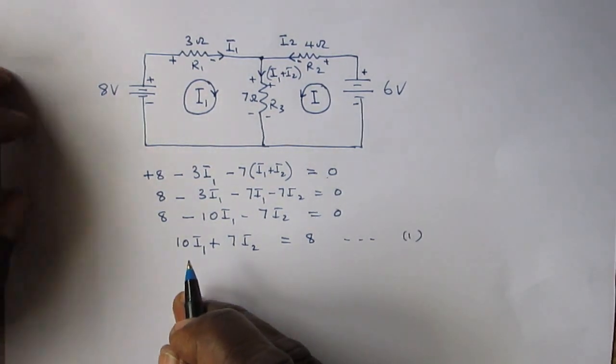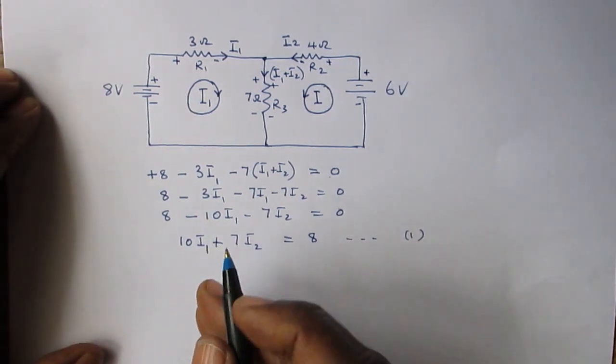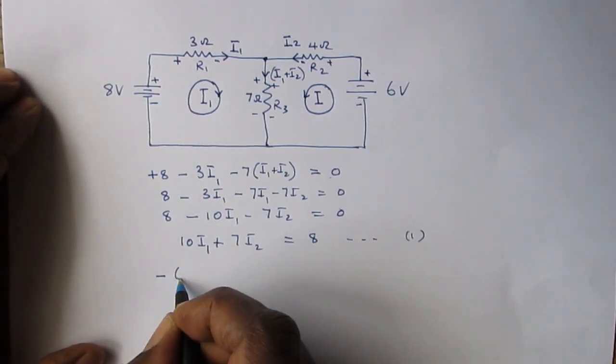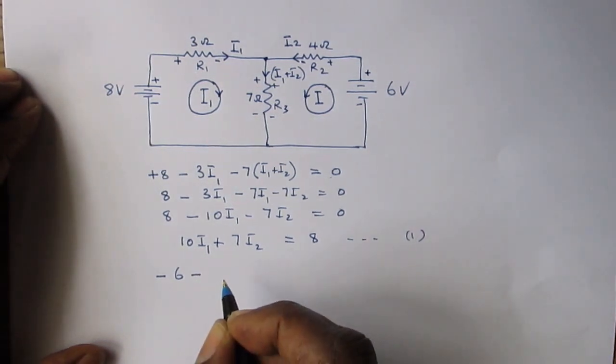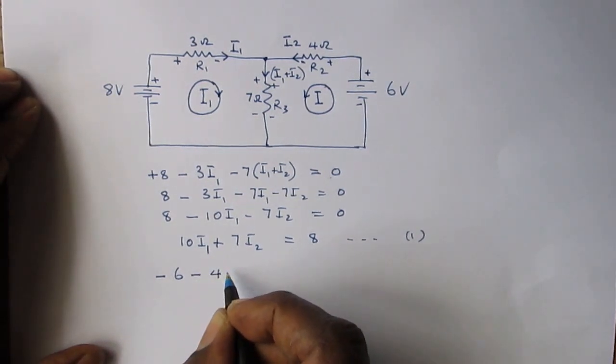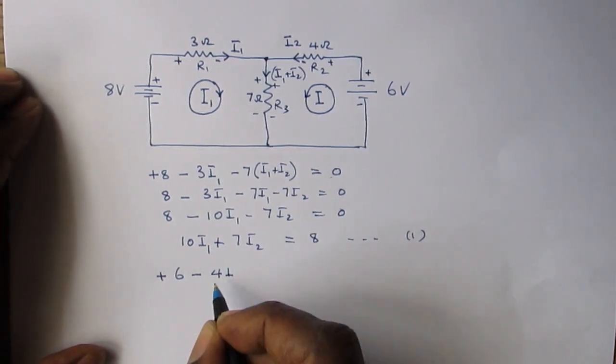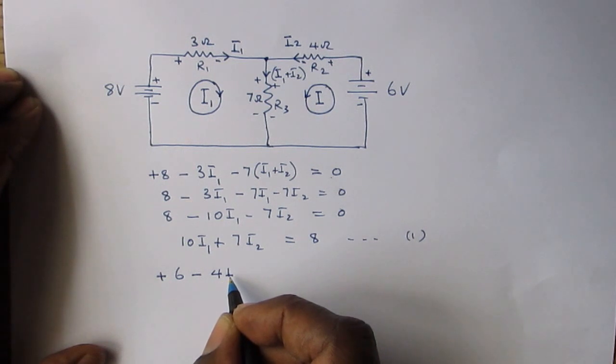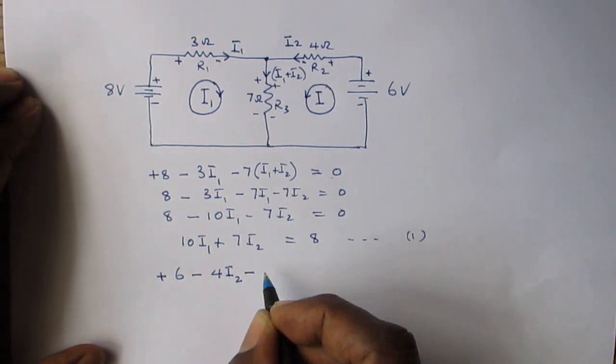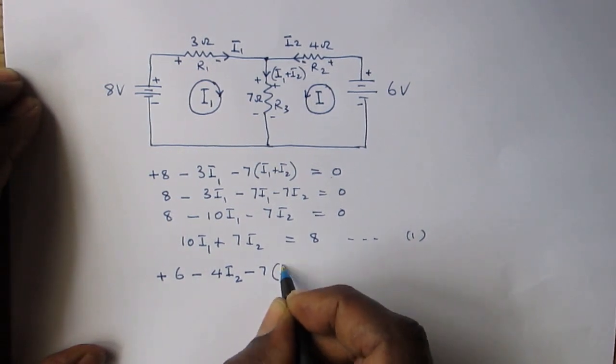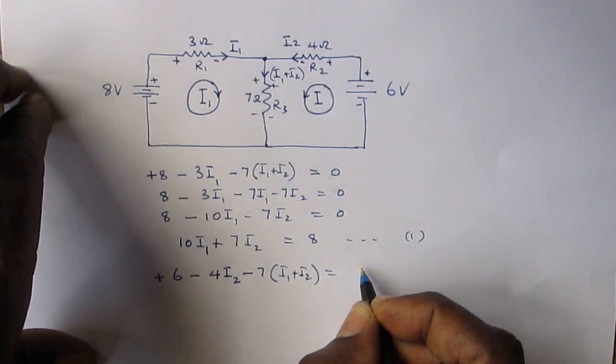Doing the same thing on the right-hand side, we have plus 6 minus 4I2 minus 7 times (I1 plus I2) equals 0.